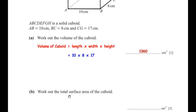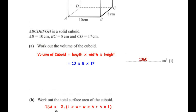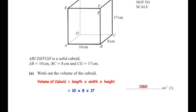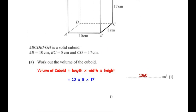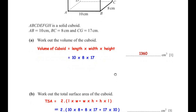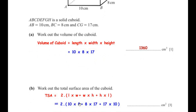We have the formula for total surface area of the cuboid as: TSA = 2 × (length × width + width × height + height × length). With length = 10, width = 8, and height = 17, substituting the values we get: 2 × (10 × 8 + 8 × 17 + 17 × 10).